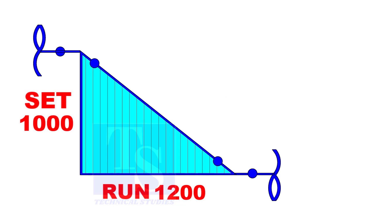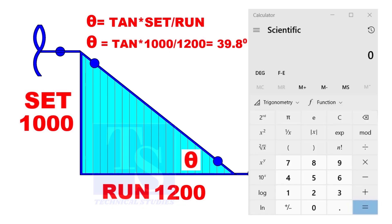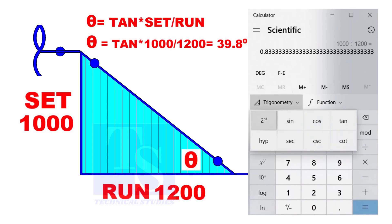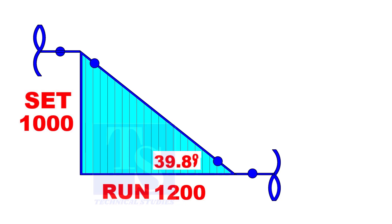How to calculate the including angle if the set and the run are given? Set divided by run, and convert the value using inverse tan (arctan). The value of the including angle is 39.8 degrees.